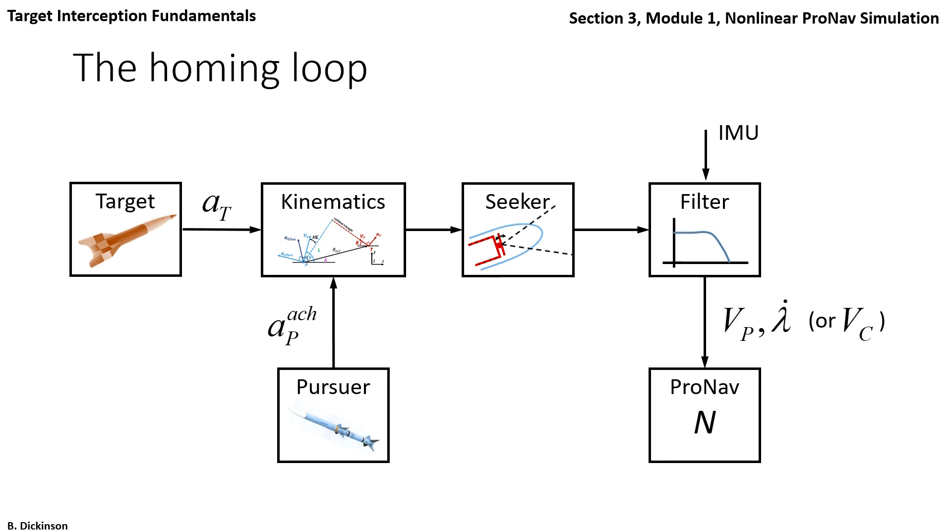Then the autopilot takes that acceleration command and produces a control effector command. That control effector command goes into the actuation systems of the pursuer. And the pursuer canards, wings, or whatever actuation system it has adjusts in response to the autopilot commands in order to achieve the commanded acceleration from the PRONAV guidance law. And this process continues until a collision course is established. If everything goes correctly, missed distance is small, and collision occurs.